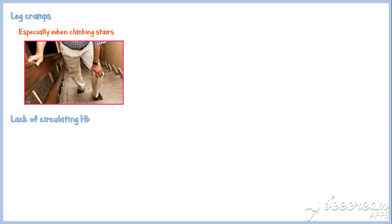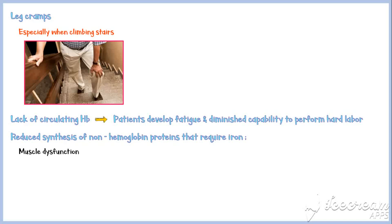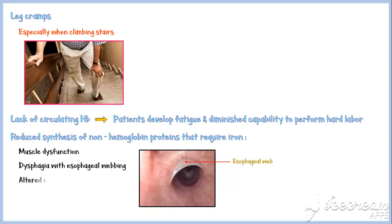Leg cramps, which occur especially when climbing stairs, are also common in patients with iron deficiency anemia. Due to the lack of circulating hemoglobin, patients develop fatigue and diminished capability to perform hard labor. Reduced synthesis of non-hemoglobin proteins that require iron as a structural component will result in muscle dysfunction, dysphagia with esophageal webbing, altered resistance to infection, and altered behavior.